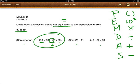Moving on. Another set of parentheses. Well, I know 20 minus 1 is 19. 37 times 19, that is equivalent. I cannot circle it.